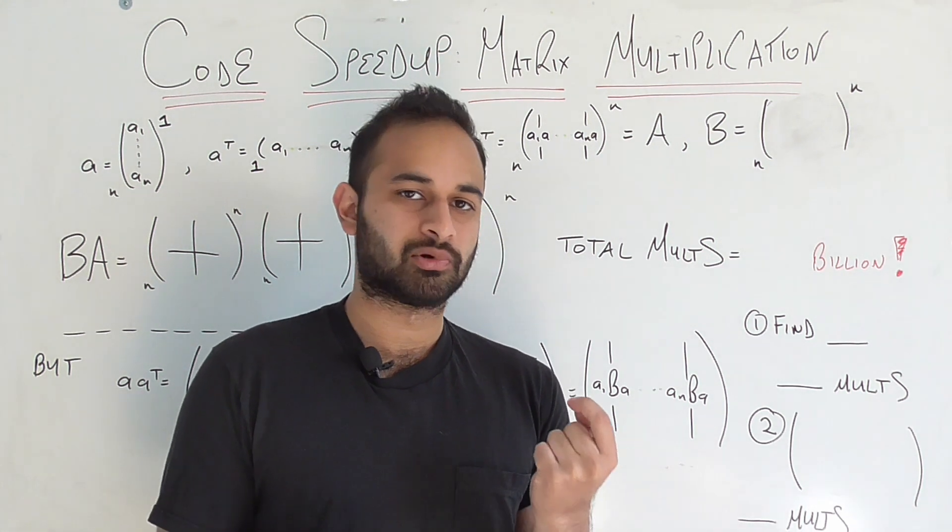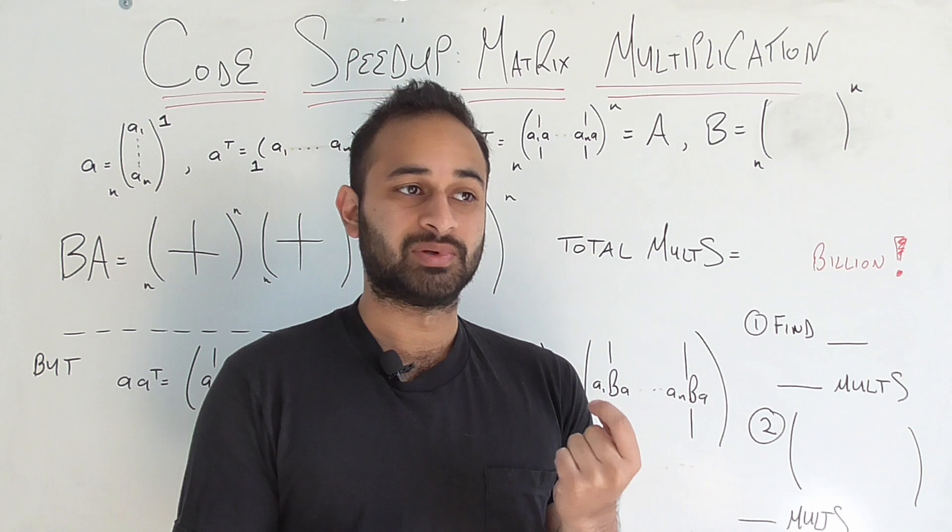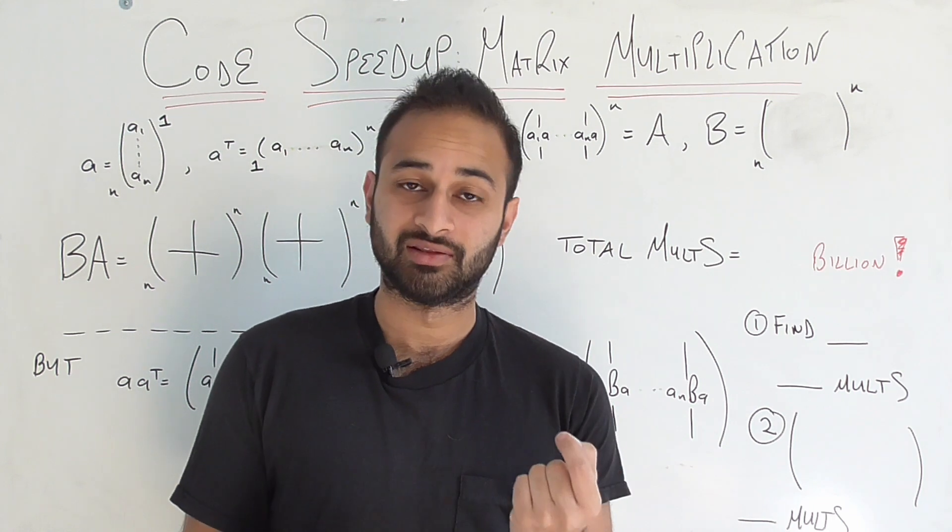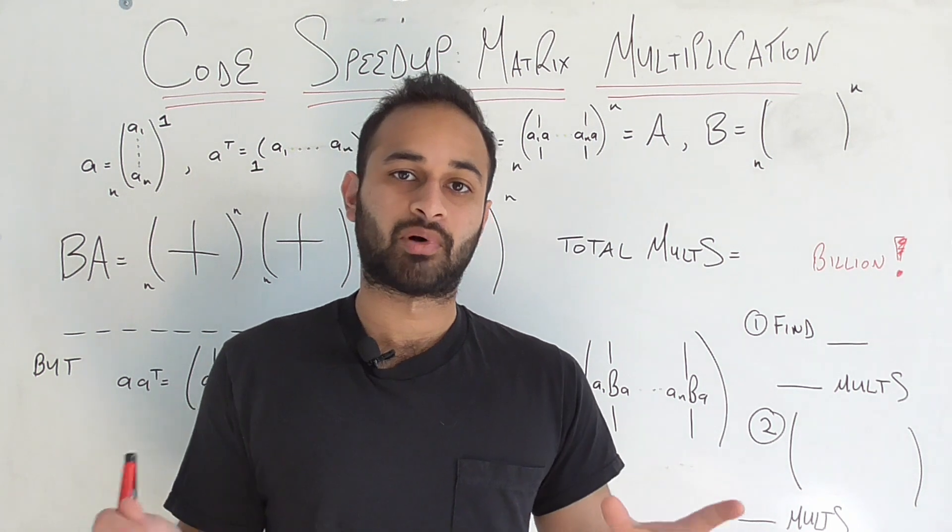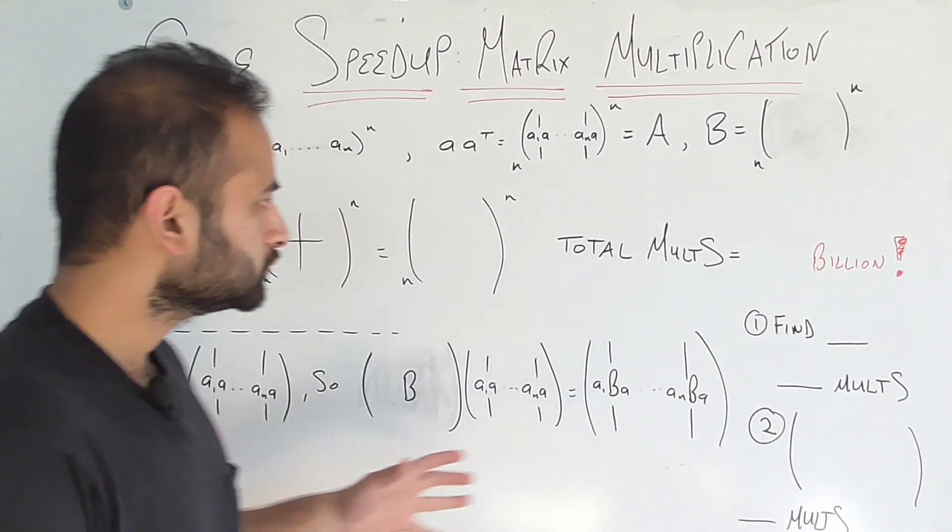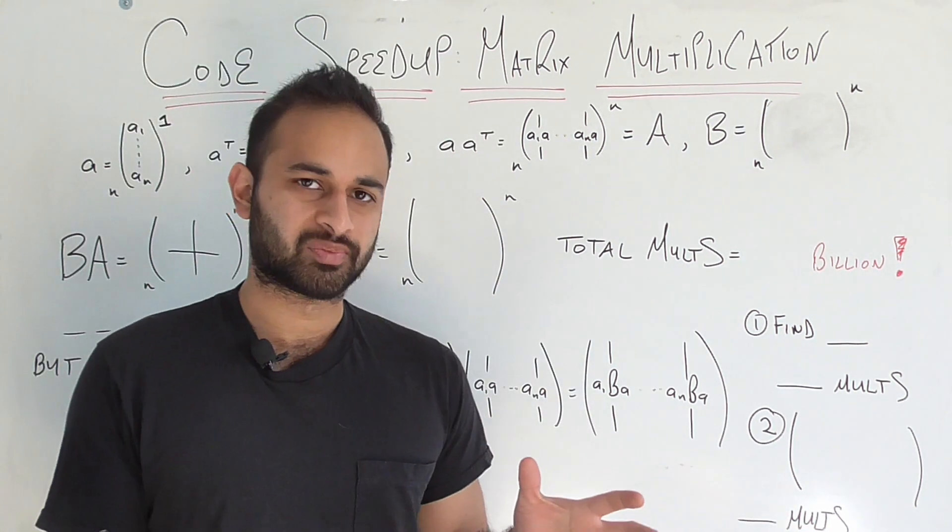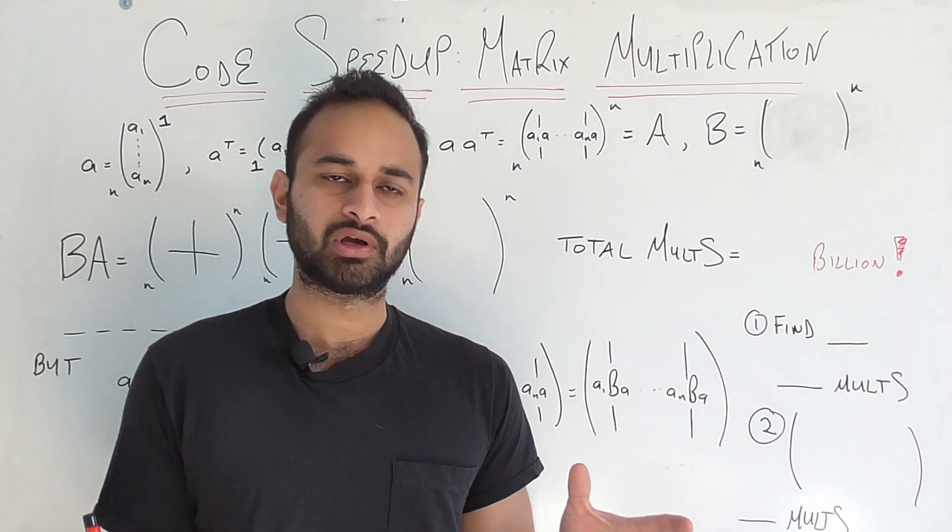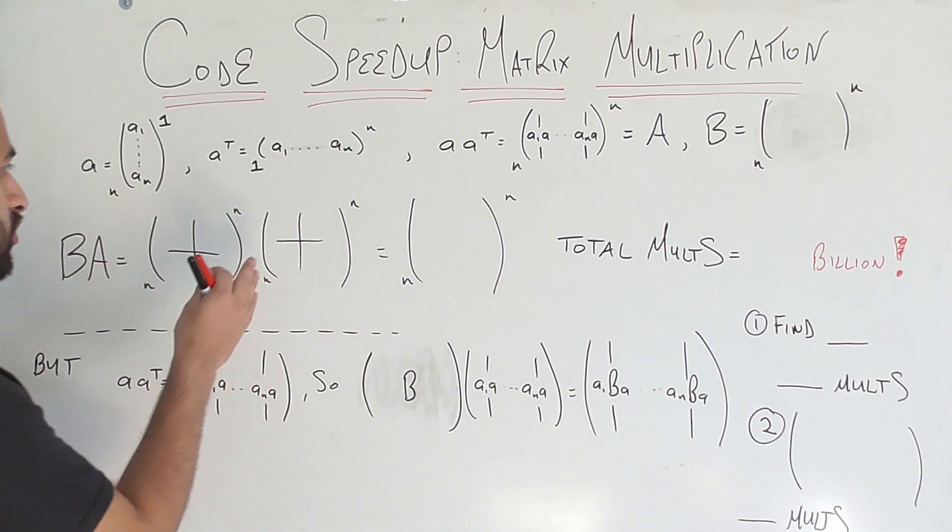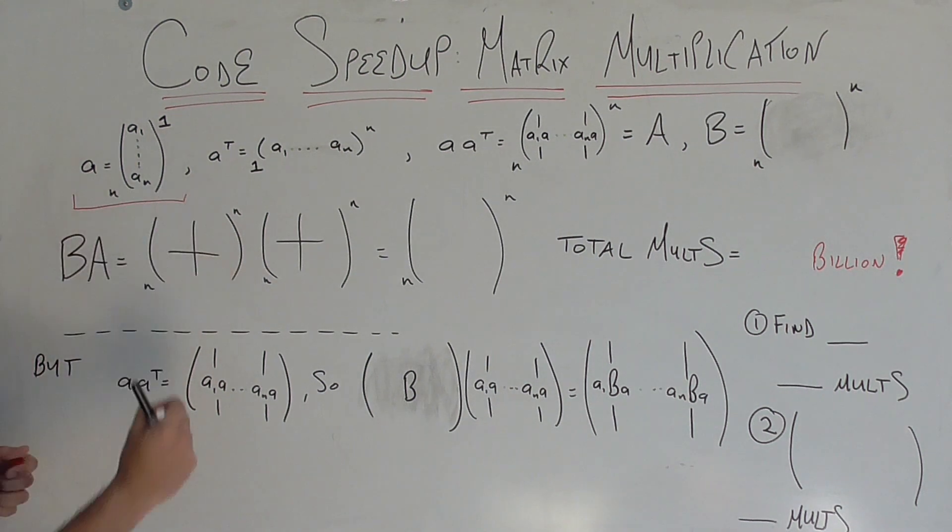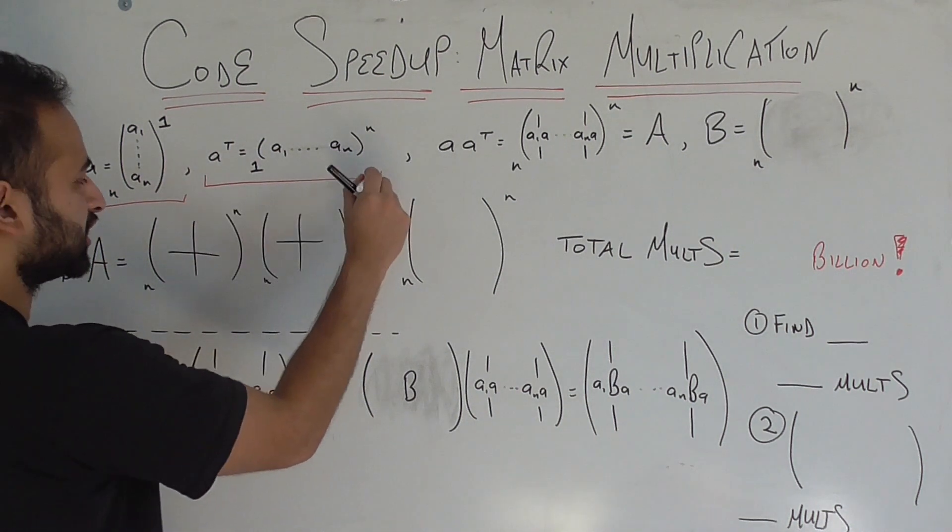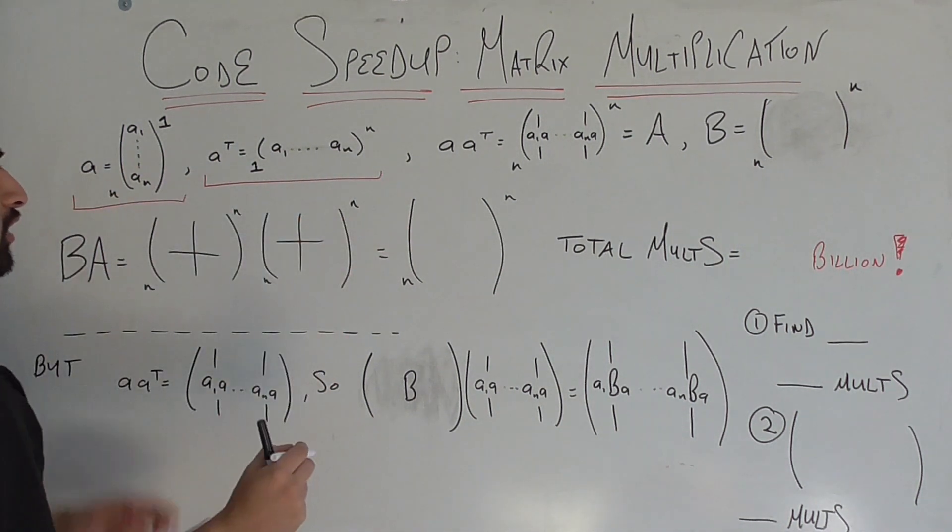But I noticed something about the matrices I was multiplying and that made stuff speed up by a factor of 2500 in the end. So we're going to get to that number in the end. But first let's set up what the problem was I was trying to solve. So it was part of a principal component analysis type code. The crux of the problem boils down to we had a vector a which was n dimensional, so a1 through an. A transpose is of course the same vector just flattened, so transposed.